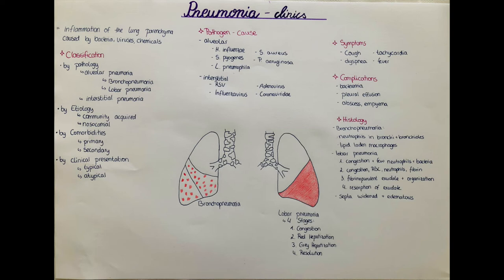Haemophilus influenzae often causes pneumonia after a viral respiratory infection. A descending laryngotracheobronchitis leads to airway obstruction by dense fibrin-rich exudate, which traps bacteria within the airways and causes pulmonary consolidation, creating a favorable environment for the bacteria to spread and culture there.